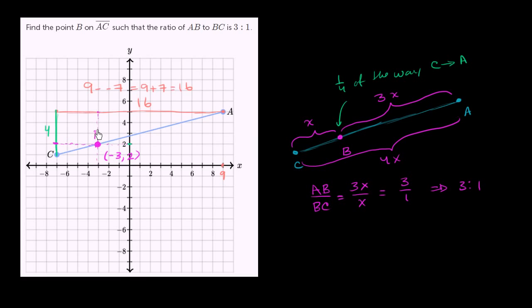So this point right over here is B. It is 1/4 of the way between C and A. Or another way of thinking about it, the distance between C and B is 1/3 the distance BA. Or the ratio of AB to BC is 3 to 1.